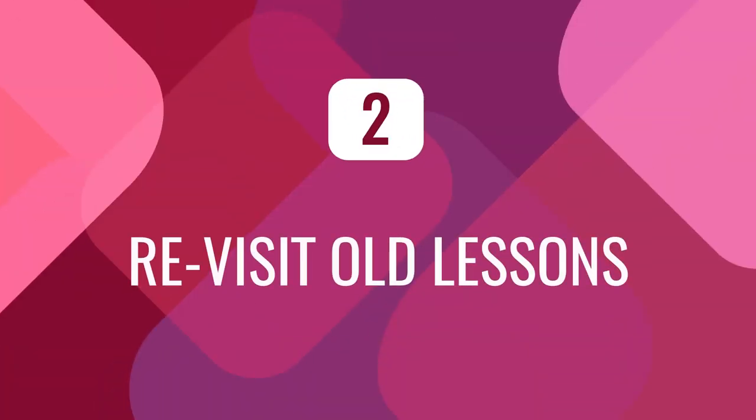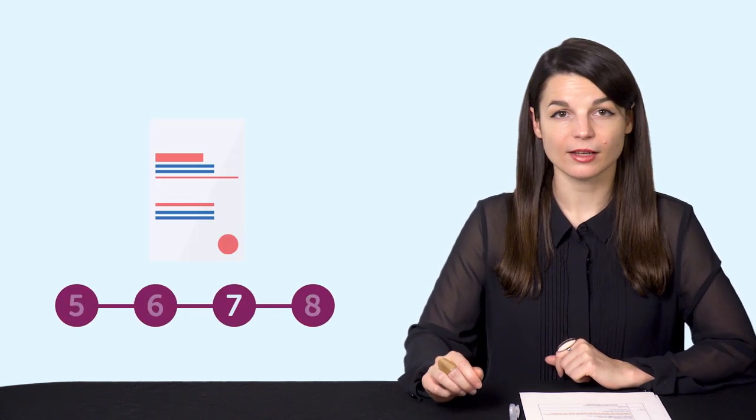Number two, revisit old lessons. An easier way to self-assess your language level is to revisit old lessons. You can do this with any program you're learning with. If you've truly made progress, then you should be able to understand the lesson dialogues with no problem. If not, then you know that you need to review them some more. Number three, try harder lessons. Also something you can do with any language resource. If you're using our program, try lessons from a higher level. If you're a lower intermediate, try upper intermediate lessons. If you don't understand anything, that's fine. But if you do, then that's a good sign that you've improved and are ready for harder lessons.